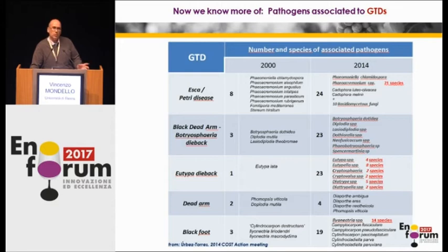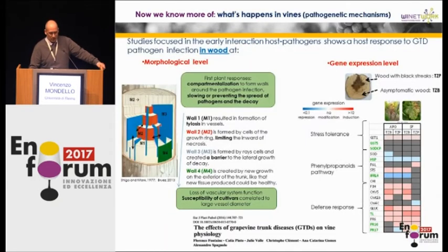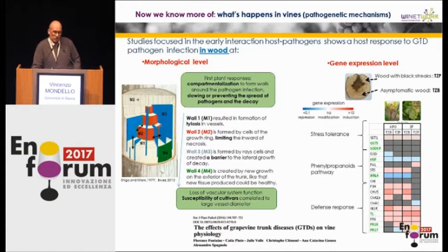After 15 years, we know more about the pathogens that cause the disease. Between 2000 and 2004, the number of associated pathogens increased substantially. This is work in progress and data is constantly updated. We also know what reactions the plant has in order to try to defend itself against infection — in terms of morphological and gene expression aspects.